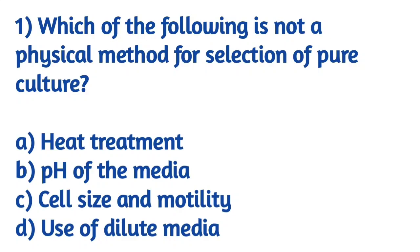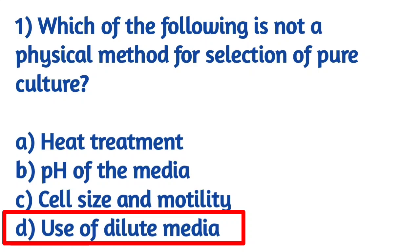Which of the following is not a physical method for selection of pure culture? Options are: heat treatment, pH of the media, cell size and mortality, and the last option D is use of dilute media. Use of dilute media is a chemical method, in which the culture media is used in dilute medium to isolate a particular type of bacterial colony.